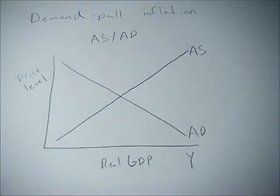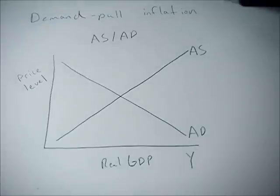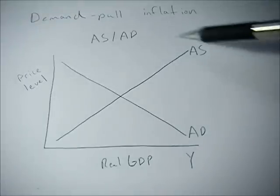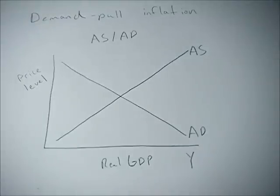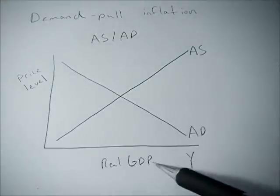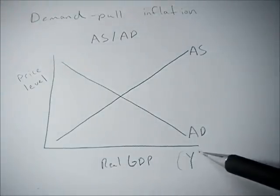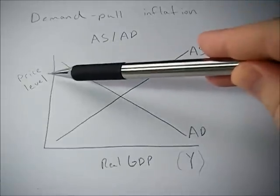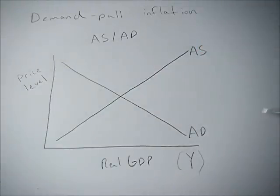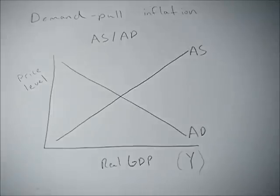This video goes over demand-pull inflation: what causes it and what it means. We start with our aggregate demand and aggregate supply model, with real GDP on the x-axis and price level on the y-axis — a downward sloping aggregate demand curve and an upward sloping aggregate supply curve.